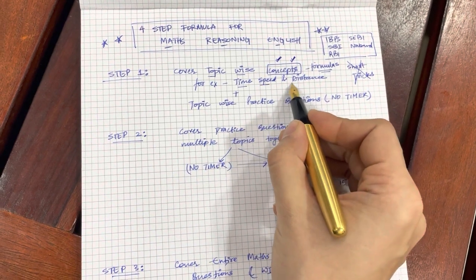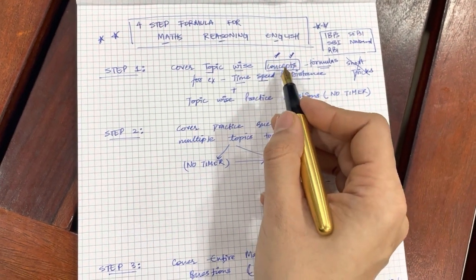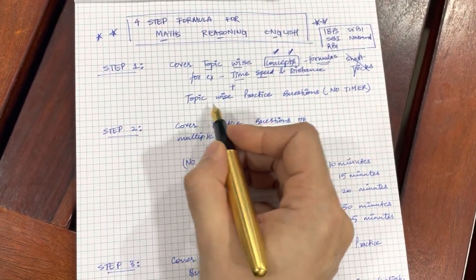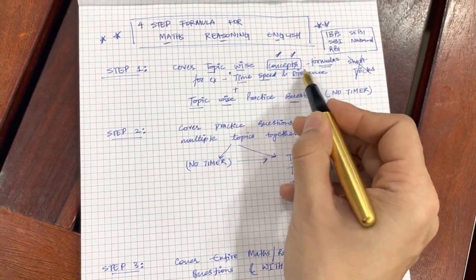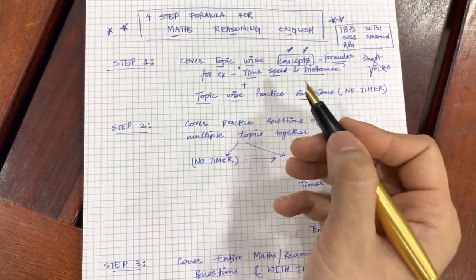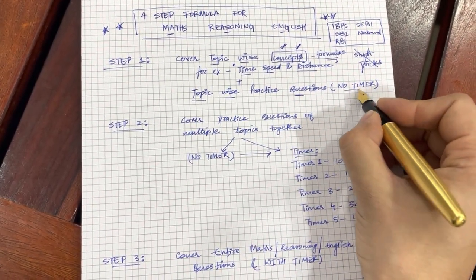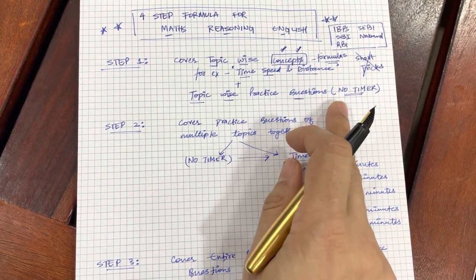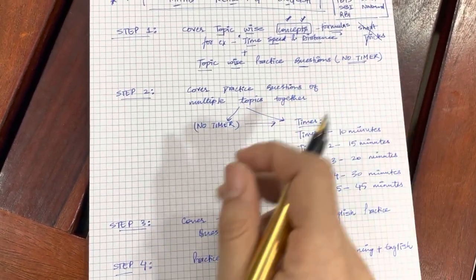For example, you are covering time speed and distance. All the formulas connected with time speed and distance, all the concepts connected with time speed and distance, they should be very, very crystal clear in your mind. In this step you will be doing one more thing and that is topic wise practice questions. For example, if I am done with the conceptual clarity on time speed distance, I will pick up probably 10, 15, 20, 30, 50 whatever is comfortable for me practice questions. Remember you do not have to use any timer at this stage. If you start using timer, you are pressurizing yourself even when your conceptual clarity is at a very rudimentary, very basic level. Please do not use a timer.